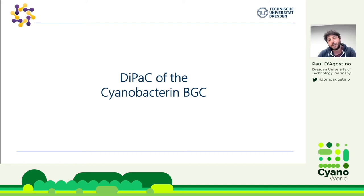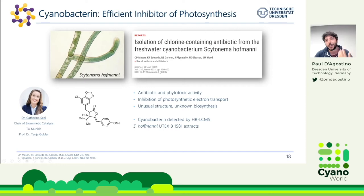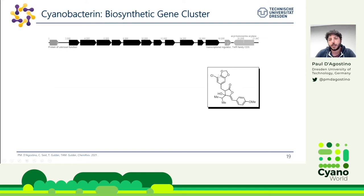This brings me to the second project: cyanobacterin. I worked on this in collaboration with Dr. Katarina Seel in Munich, in the group of Professor Dr. Tanja Golda, who was interested in halogenases. Cyanobacterin was the first chlorinated natural product identified from freshwater, back in 1982. It has phytotoxic activity, inhibiting photosynthetic electron transport. It has an unusual structure, and the biosynthesis remained unsolved for a very long time — this is what we wanted to investigate.